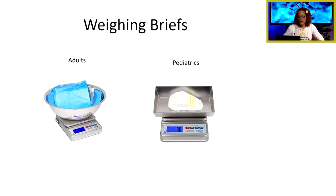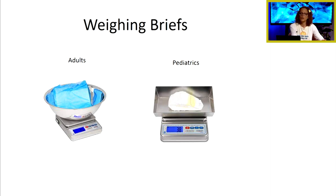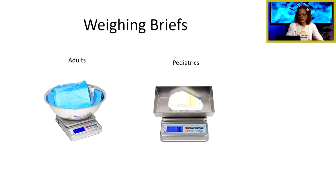We may also weigh briefs to estimate urine output, using a special calculation based on the weight of the soiled brief over a shift. In pediatrics, diapers are placed on a scale to measure urine output. We also track the number of wet briefs changed per shift. These methods allow us to measure output even when patients cannot use a commode or urinal.